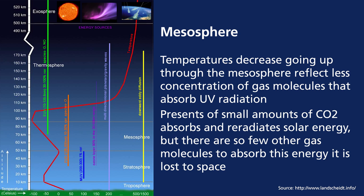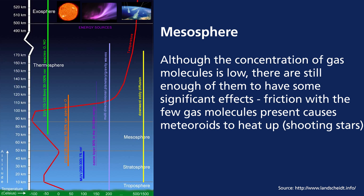Because there are so few other gas molecules to absorb the energy re-radiated by CO2, it is often lost to space, cooling the mesosphere. This is the opposite of the effect CO2 has in the troposphere, where CO2 acts as a greenhouse gas by trapping heat energy from Earth's surface and transferring it to gas molecules in the atmosphere. Although the concentration of gas molecules in the mesosphere is quite low, there is still enough friction among them to cause meteoroids to heat up — these we call shooting stars. Most meteoroids that collide with our atmosphere are burnt up in the mesosphere and don't reach the surface of our planet.